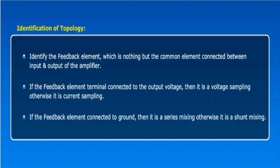Now we see how to identify the topology of your negative feedback amplifiers. Identify the feedback element, which is the common element connected between the input and output amplifier. If the feedback element terminal is connected to the output voltage, then it is voltage sampling; otherwise it is current sampling. If the feedback element is connected to the ground, then it is series mixing; otherwise it is shunt mixing. From that, we can identify the type of sampling and mixing, and thus determine which type of feedback amplifier it is.